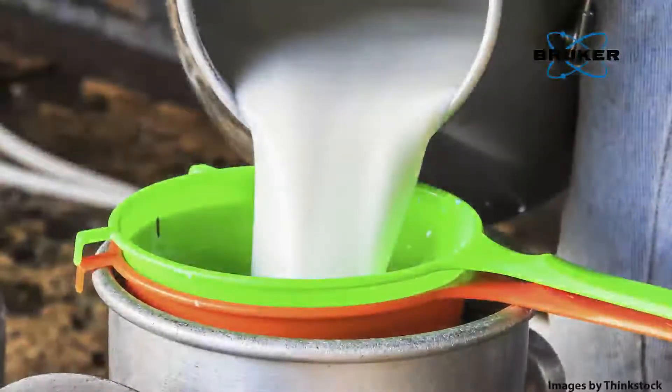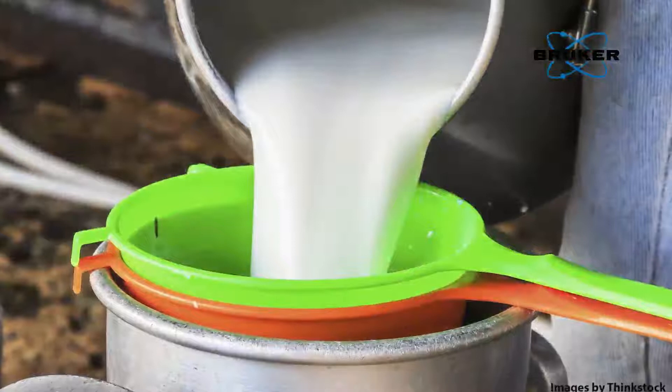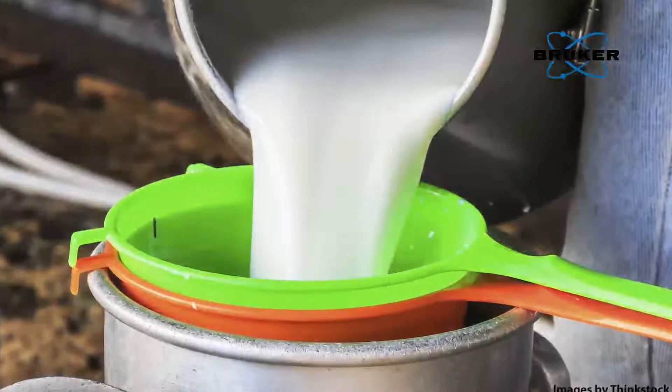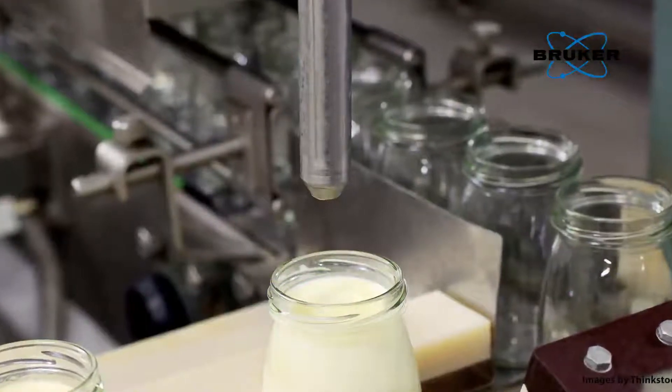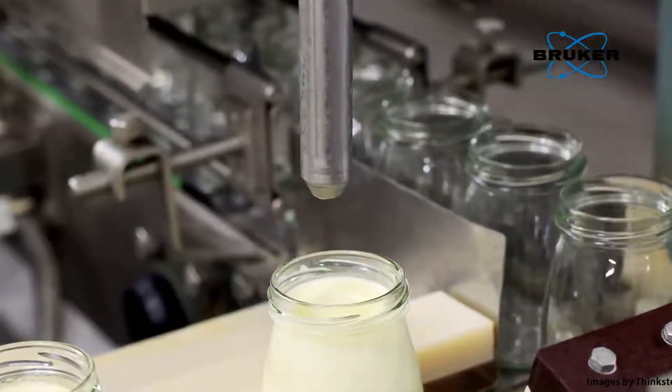Often, the first manufacturing steps are skimming off the cream and then ultra-filtration of the skim milk. Cream and UF skim milk are then added to standardize the fat and protein level, ensuring a consistent starting point in the production process.